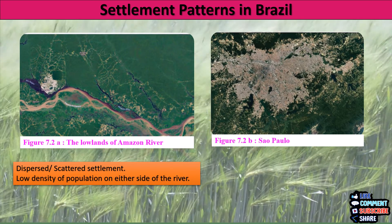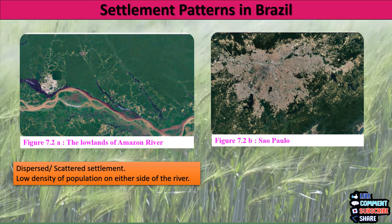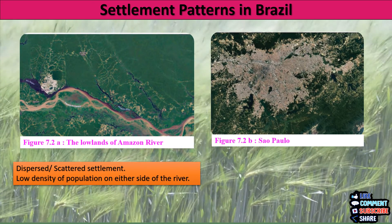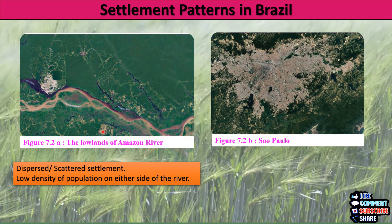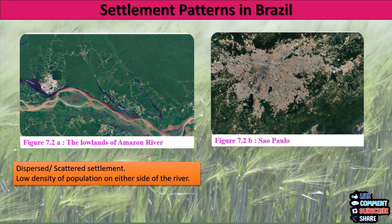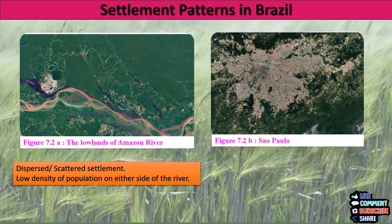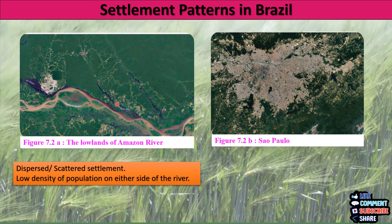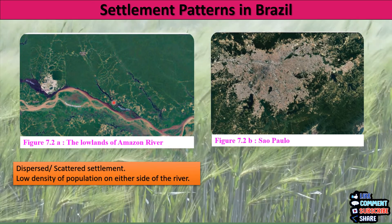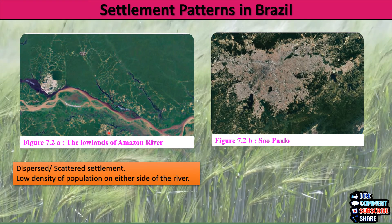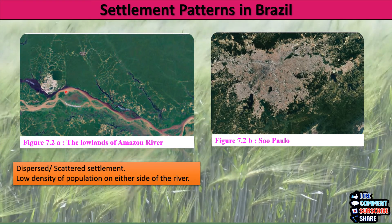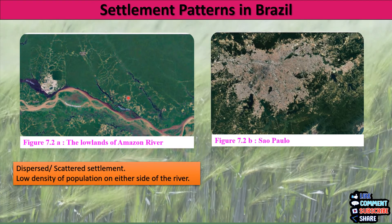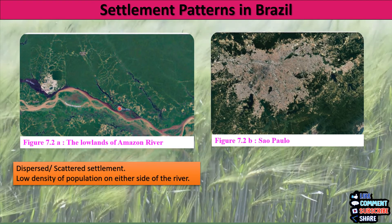We have to observe these settlement patterns and write their types and comment on their density. If we observe this image, we see this is the Amazon River Basin. In the brown we see settlements, but the settlement is very less — it is scattered and dispersed. We see settlement on either side of the river, so this type of settlement is scattered or dispersed settlement.